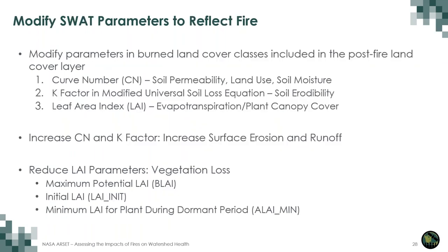This slide details the different parameter changes made to burned land cover classes in the post-fire land use map. The parameters changed are curve number, modified universal soil loss equation K factor, and leaf area index. These parameters each relate to something associated with fire occurrence: curve number and K factor relate to soil erosion or permeability, and leaf area index relates to plant cover and evapotranspiration. In our model, we increase curve number and K factor, which increases surface erosion and runoff as expected after a fire, and we reduce leaf area index parameters to reflect vegetation loss. The demonstration will show more explicitly what changing these parameters means.